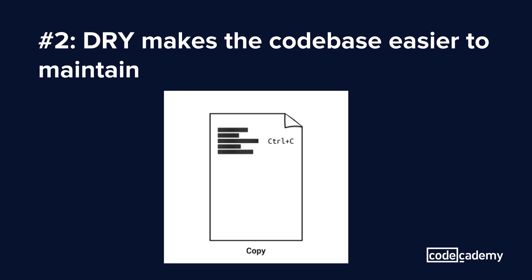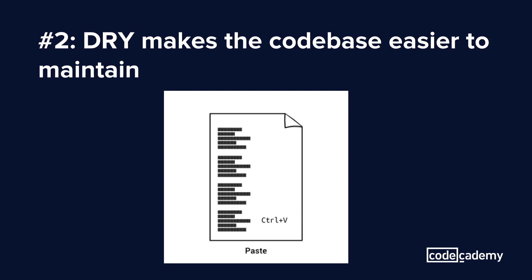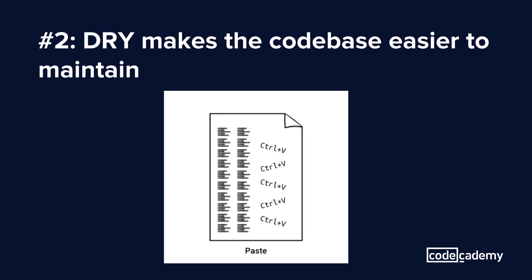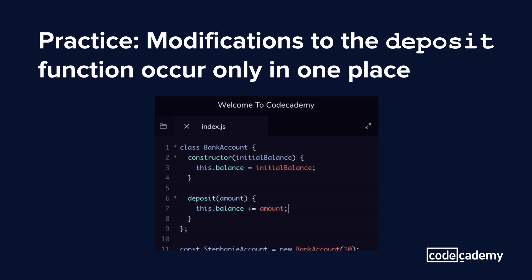Just as DRY saves you from having to rewrite logic when it appears in other places, it also saves you from rewriting code when you want to make changes. You'll also avoid errors, as you'll only need to modify one piece of code instead of 10. For example, if we want each deposit to return the new balance, we would only have to do that in one place instead of four.